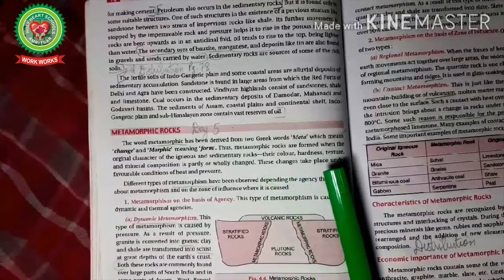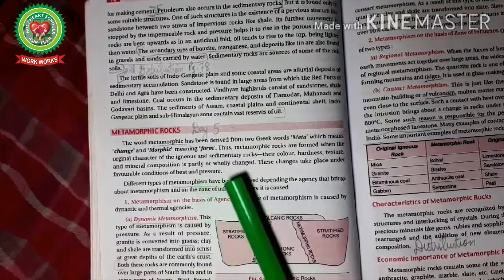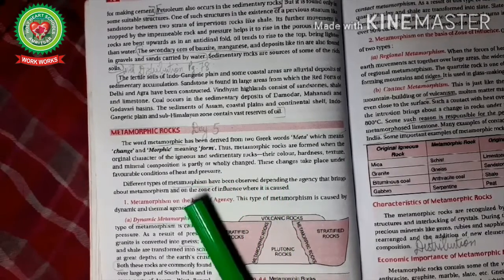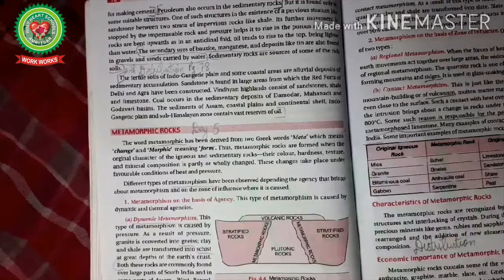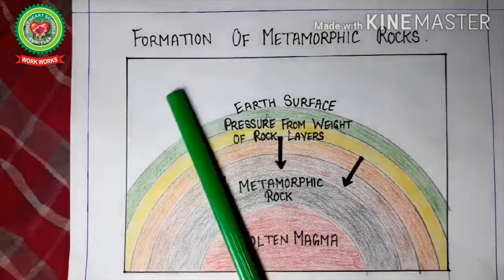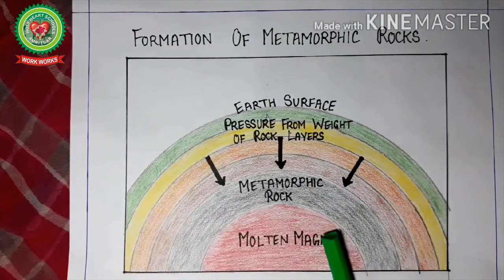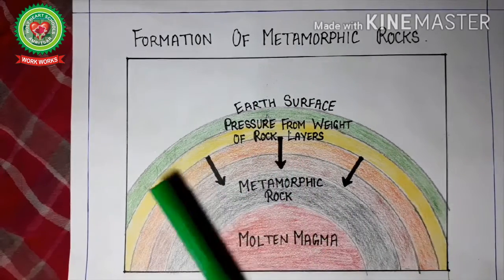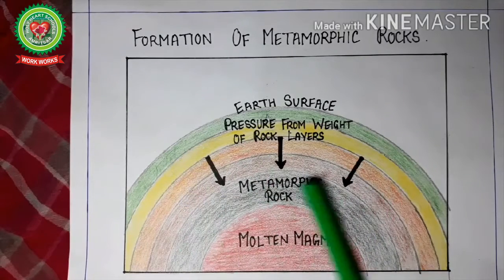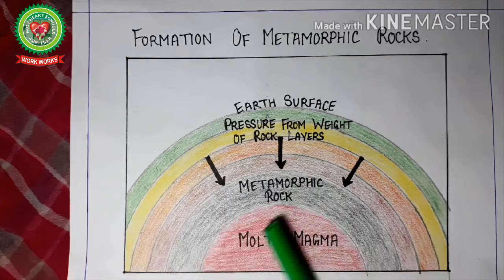hardness, texture and mineral composition — is partly or wholly changed. These changes take place under favorable conditions of heat and pressure. Let us discuss the formation of metamorphic rocks through this diagram. In this diagram we can see that the earth has concentric layers. As we go inside the earth, the temperature and pressure both increase.